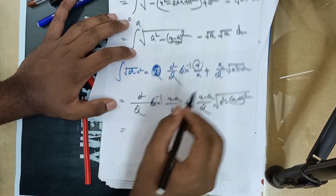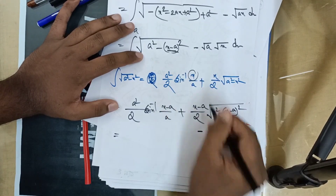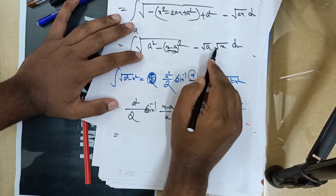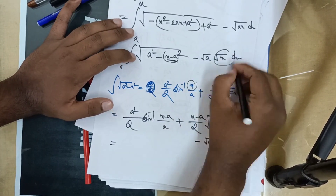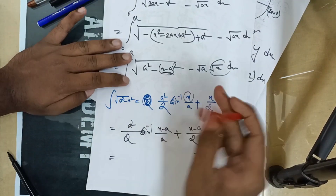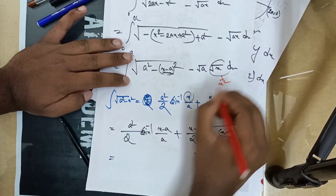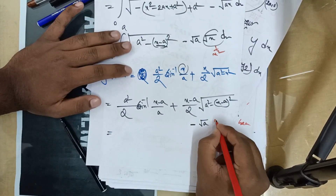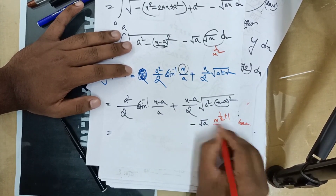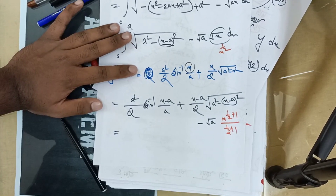Using the formula, root over x means x to the power half. So when we integrate, it becomes x to the power half plus one, that is x to the power three-halves, divided by three-halves.